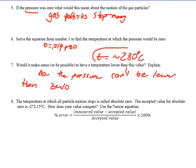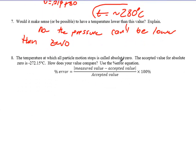So I actually have a typo in here. The temperature at which all particle motion stops is called absolute 0. That's true. The accepted value for this is negative 273.15, not negative 272.15. How does your answer compare? Go ahead and get me that. Now, that's the lab and the whole idea of the lab was to introduce absolute 0 and why it exists and what it is.